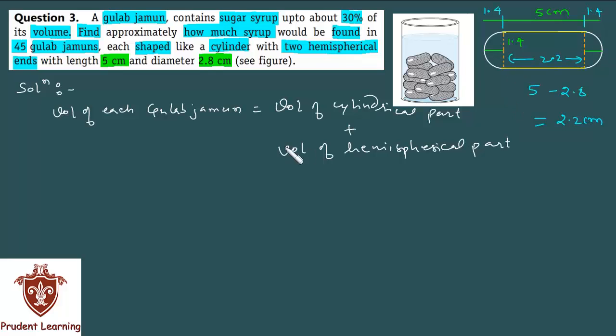Volume of hemispherical part - or total you have 2 hemispherical parts, so multiply by 2. Now we know that volume of a cylinder is given by πr²h, and 2 into volume of hemisphere is given by 2 third of πr³.